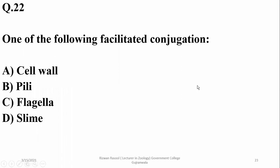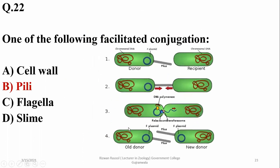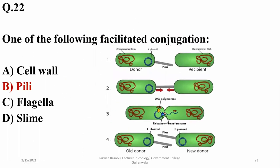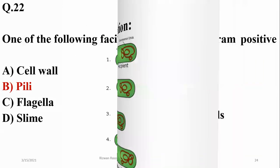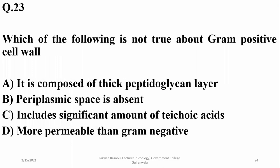One of the following facilitates conjugation: pili are involved in the conjugation or mating process of bacterial cells. Which of the following is not true about gram positive cell wall? Gram positive cell wall is composed of a thick peptidoglycan layer — yes, that is true.